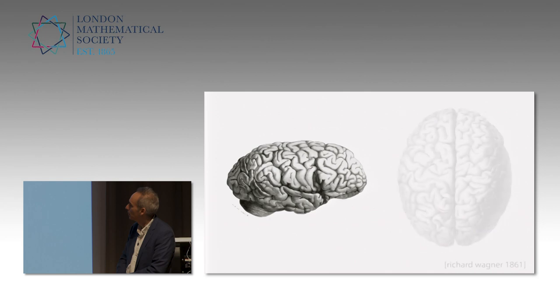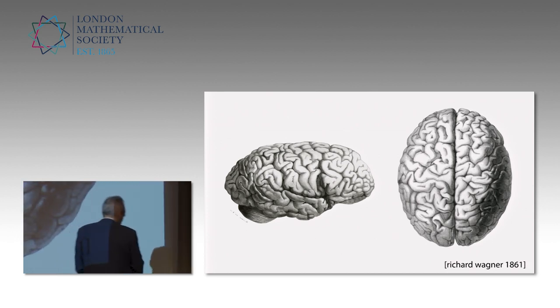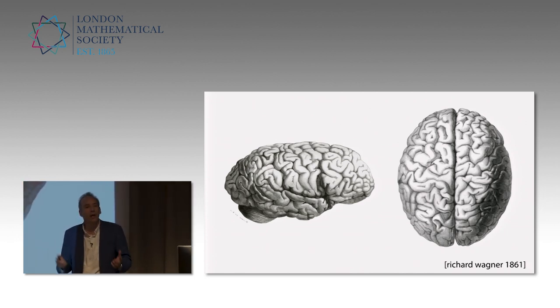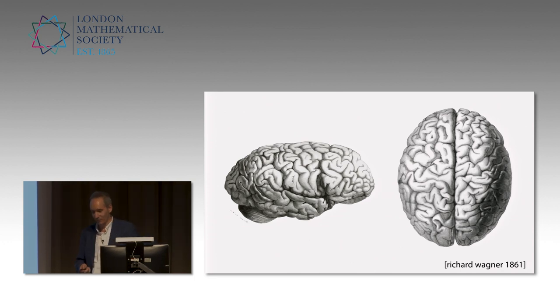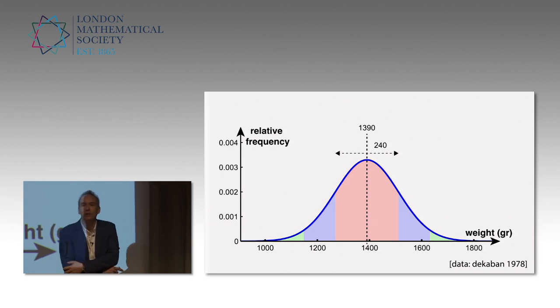So what about Gauss's brain? Well, this is it. Beautiful drawing by Wagner, 1861. What can we say? You have to compare to other brains. So I did my homework and collected data about brains.